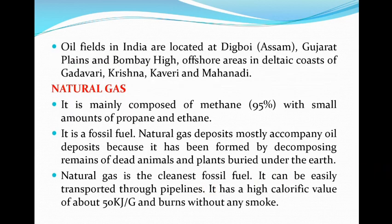Oil fields in India are located in Digboi (Assam), Gujarat plains, and Bombay offshore areas, and in the delta coastal regions of Godavari, Krishna, Kaveri, and Mahanadi.